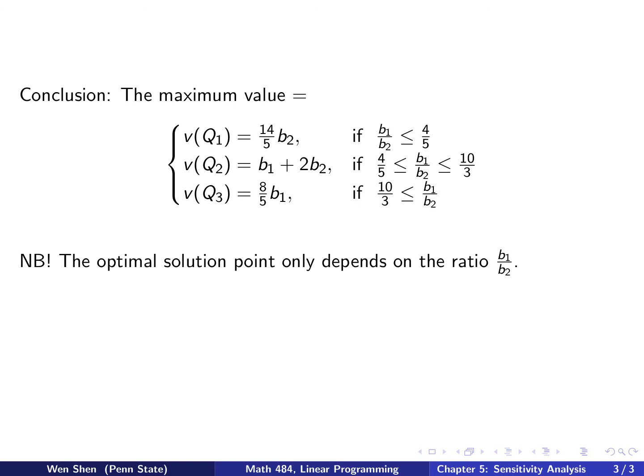Okay, so here again there's observation that the optimal solution point, which q we will be picking, it only depends on the ratio B1 over B2. Okay, so after we have solved the dual problem, and then we apply duality theorem, which says that this max value here for the dual would also be the mean value for the original problem.